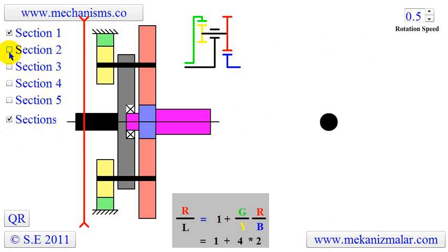The first section shows the cross section of the input shaft. Here, the red line shows where the section has been cut.